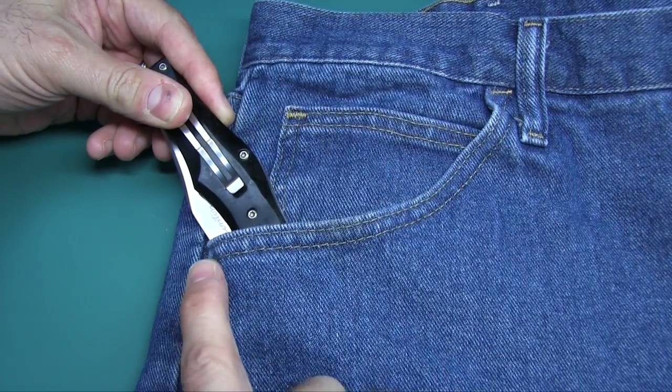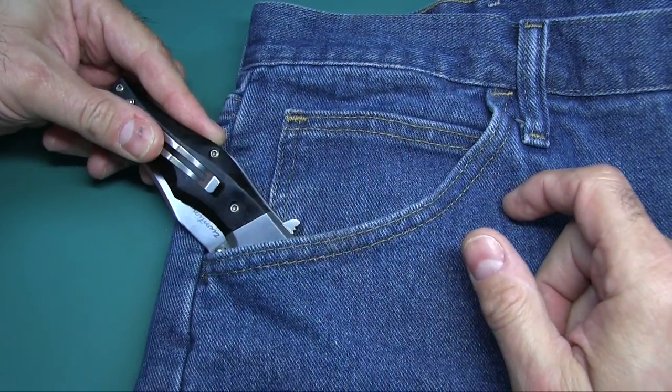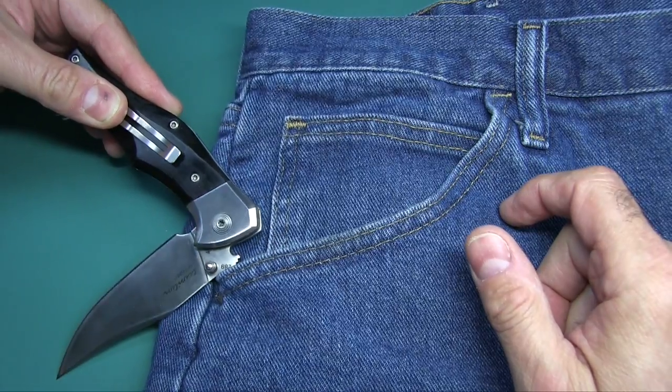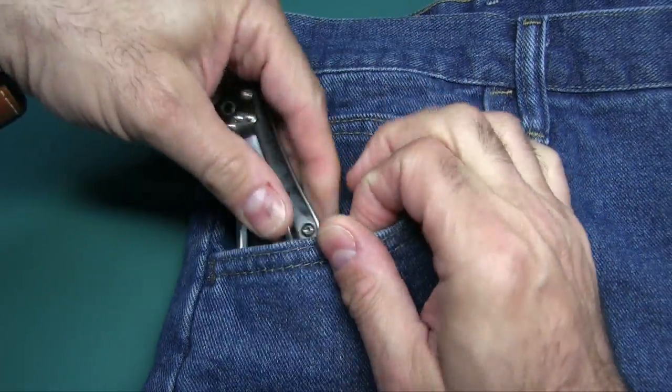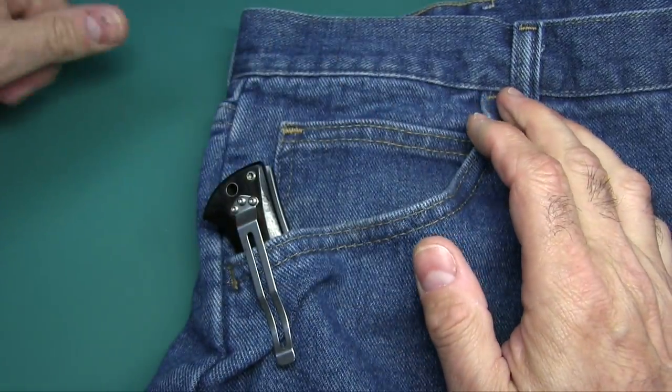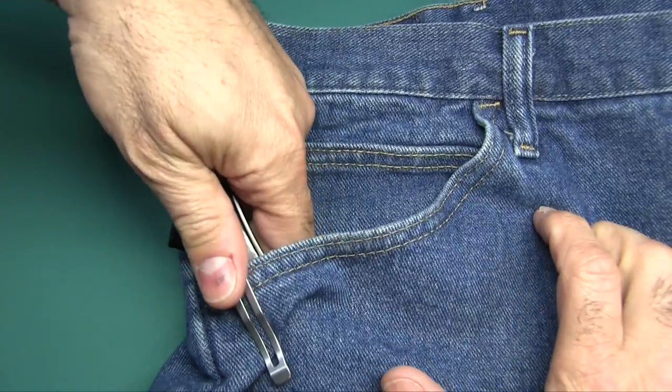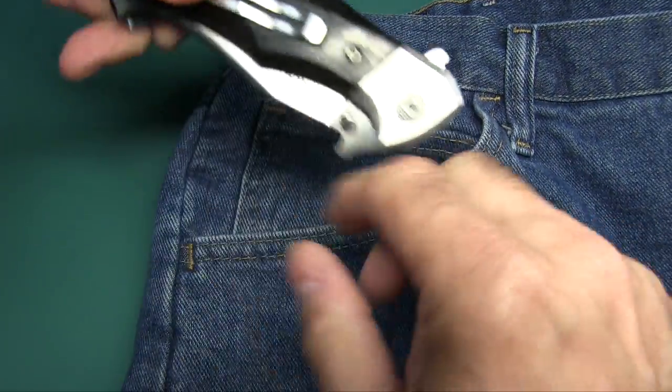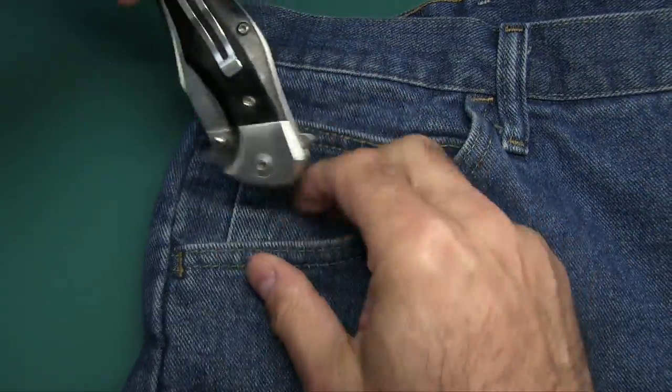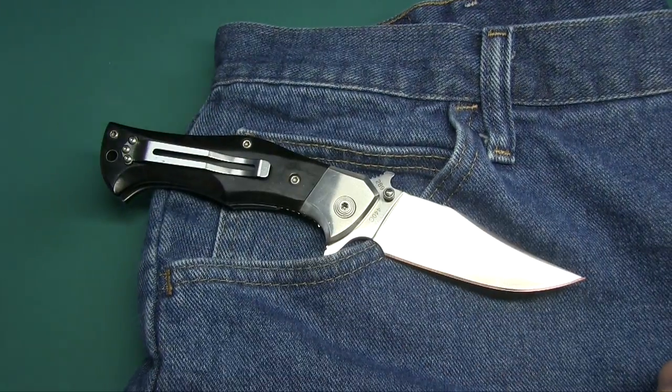How does the Wave work? The Wave helps you deploy that knife while pulling the knife out of your pocket. What happens is, as you pull it, this piece right here catches the edge of your pocket and it starts to deploy it. See that? When you pull it out, you pull it out and back. It's a lot easier to do it when it's on your body. But I don't have pants on right now. Pretty neat.